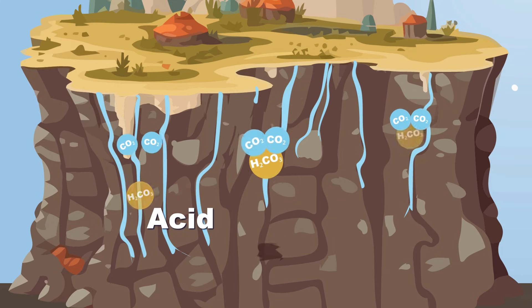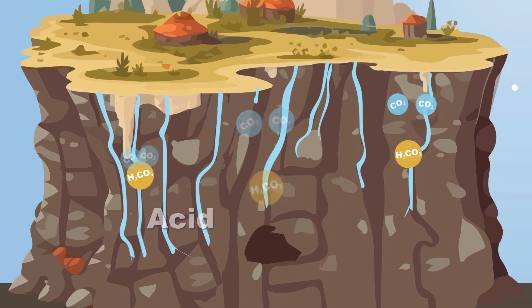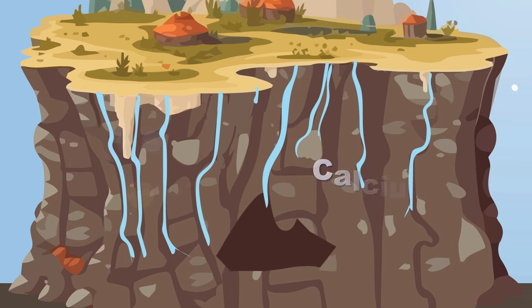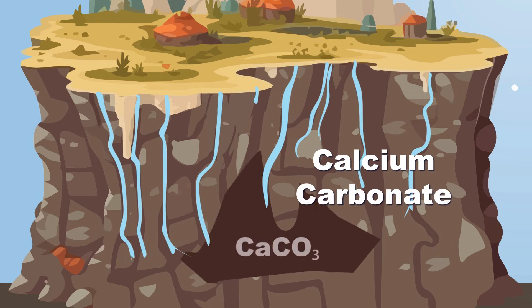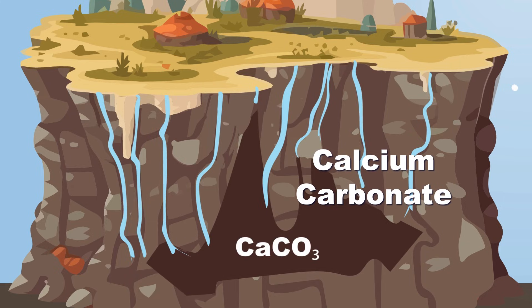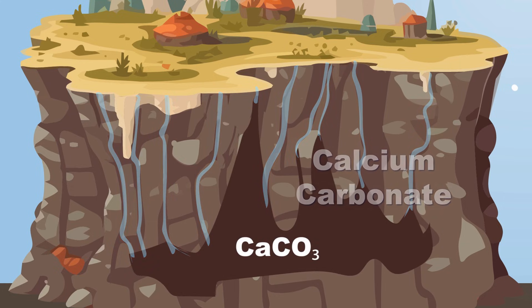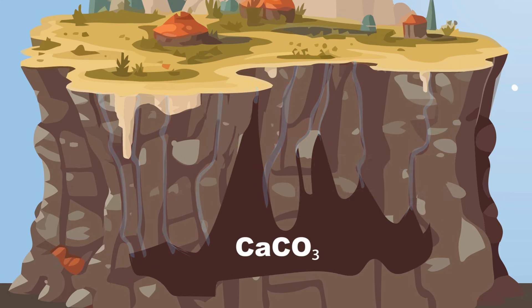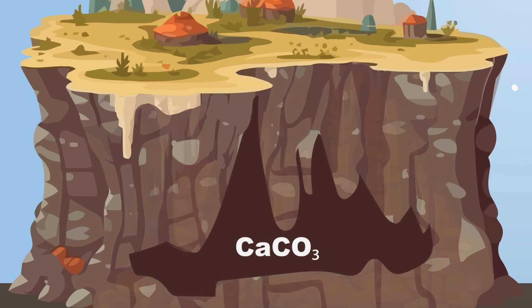When carbonic acid comes into contact with calcium carbonate, carbon atoms are broken, forming bicarbonate and free calcium ions. This chemical weathering process is what makes the rocks dissolve.